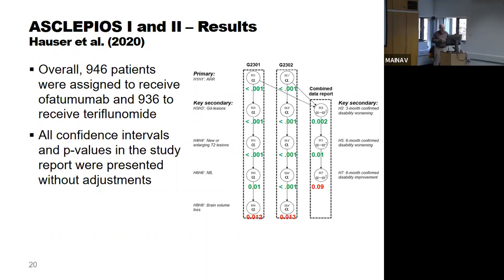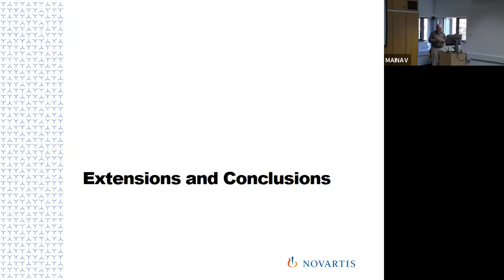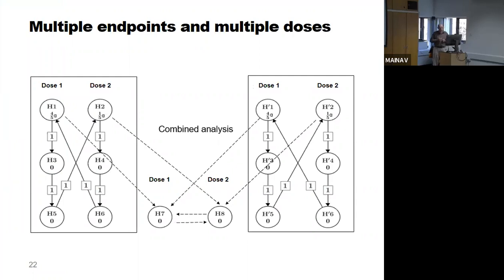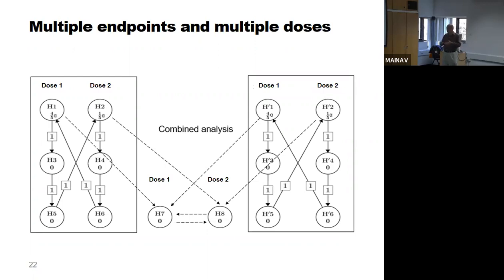These results were the basis for the regulatory submission for this product. This is the situation for multiple endpoints. An extension arises when you have more than one dose. In that case, the graph becomes more complicated: study one on the left, study two on the right, combined analysis in the middle, with two doses and three endpoints in each confirmatory trial — six hypotheses per trial — plus hypotheses for a combined analysis for each dose.